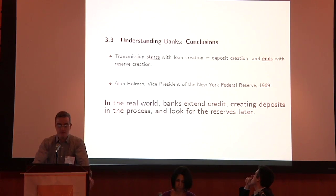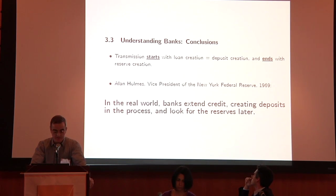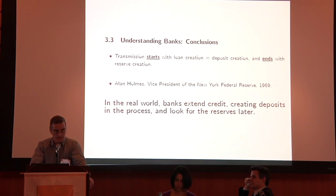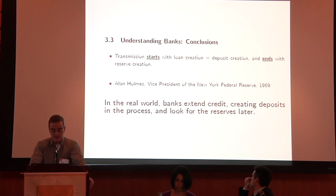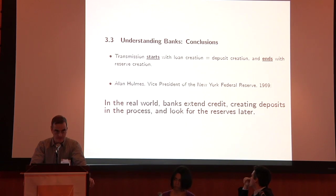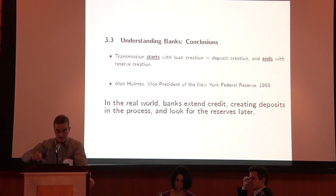When it comes to banks, the conclusion is: the transmission, when something happens in the financial sphere, starts with loan creation — which equals and entails deposit creation — and ends with reserve creation. Here's a quote from Alan Holmes, at the time Vice President of the New York Federal Reserve: 'In the real world, banks extend credit, creating deposits in the process, and look for the reserves later.' That chain of three elements goes exactly the other way around from what it typically does in many undergraduate textbooks.